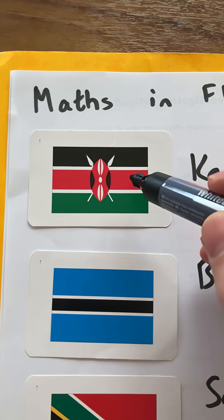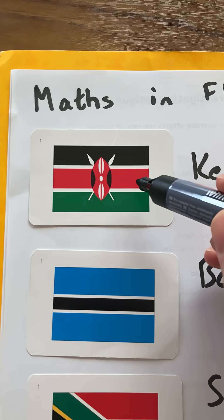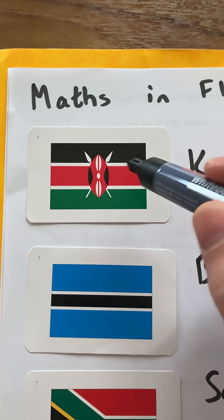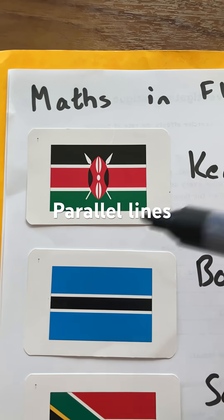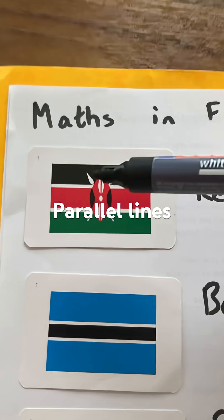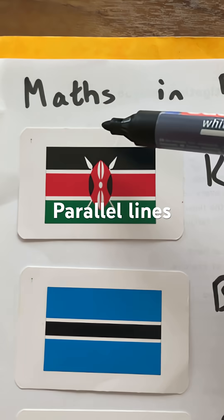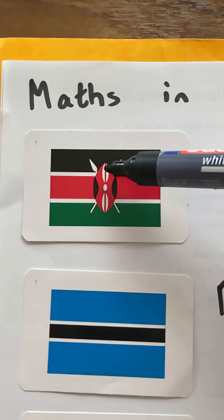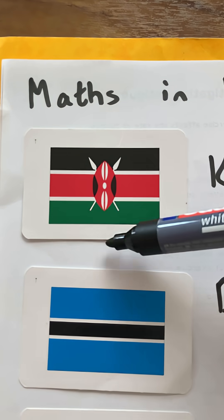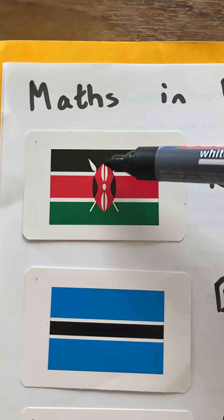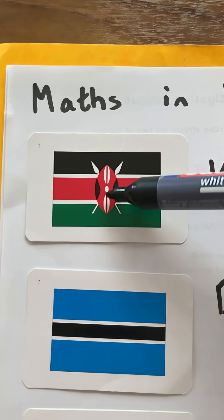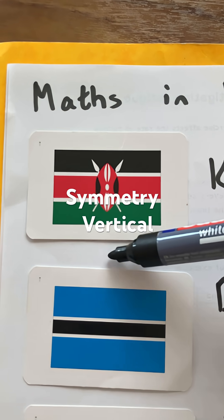We see the black, white, red, and green, all in parallel lines. And if we have a line down the middle there, we would have a vertical line of symmetry.